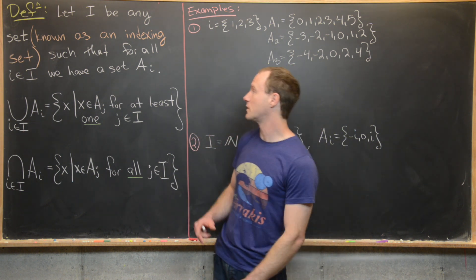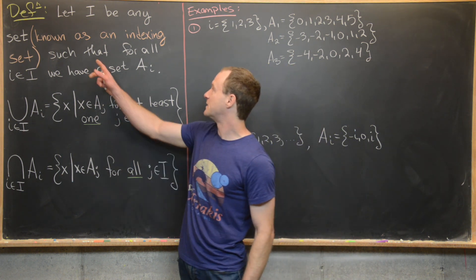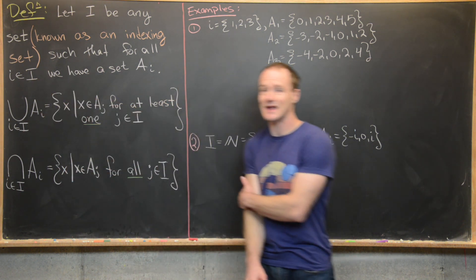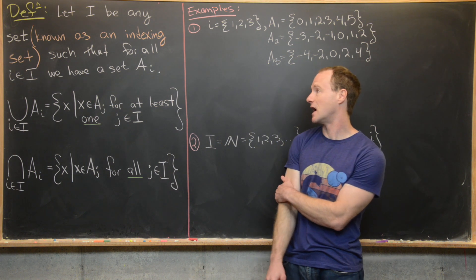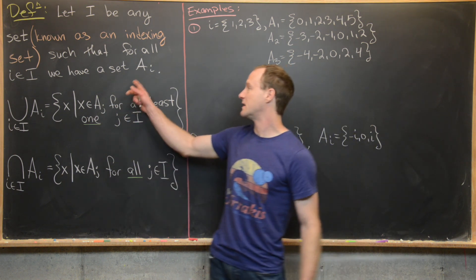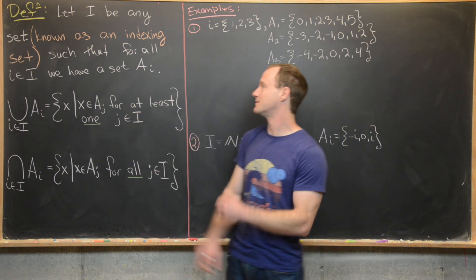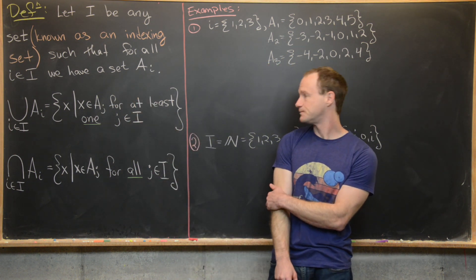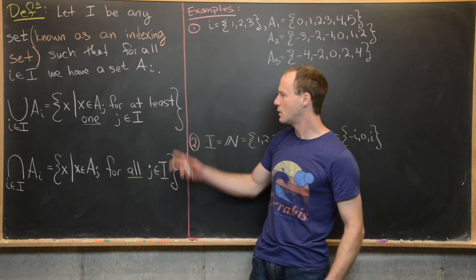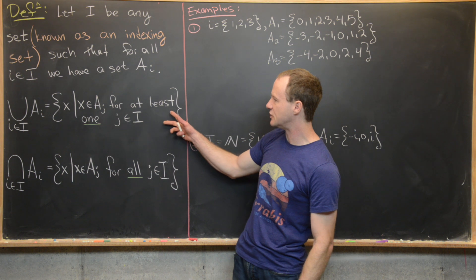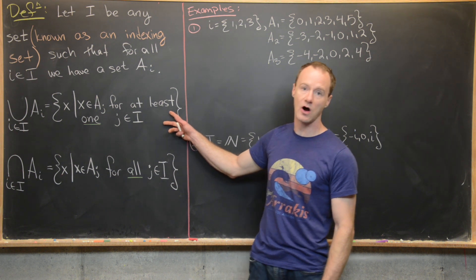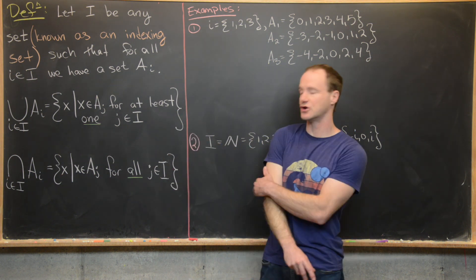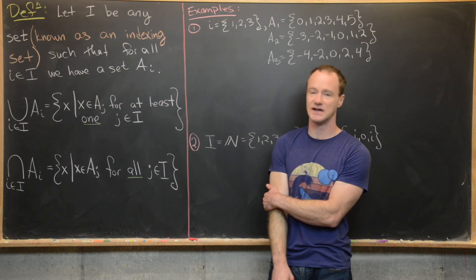The one rule that you need is that for all little i in capital I, we can produce some set A sub i. And then we want to define the union over all of these sets and the intersection over all of these sets.